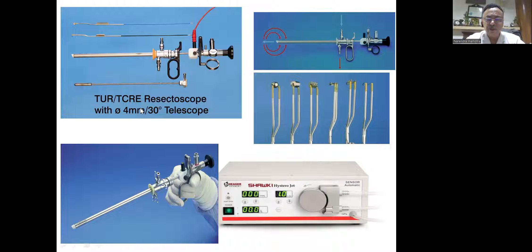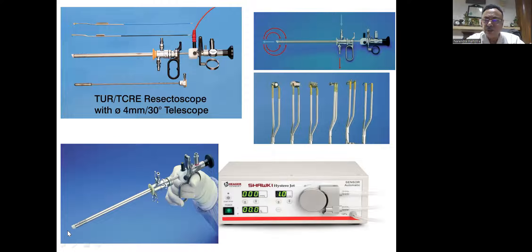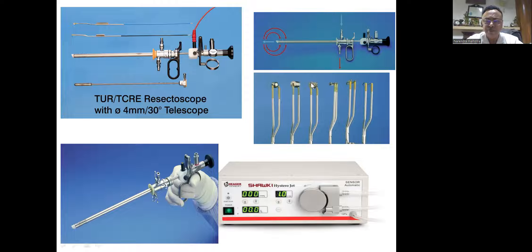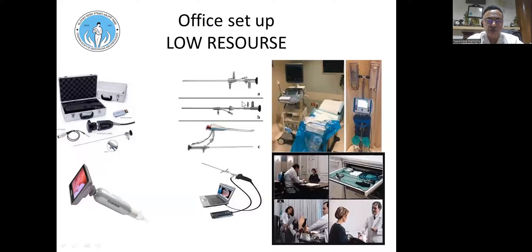A proper resectoscope has a TUR/TCR design with a 4 mm 30-degree telescope and active element. There are two types: one where the active element always comes out then goes in (urologist style), and one where it goes out then comes in (gynecologist style). Active elements include rollerball, roller drum, spike roller drum, Collins knife, hooks, and loops — all used for proper operative hysteroscopy.